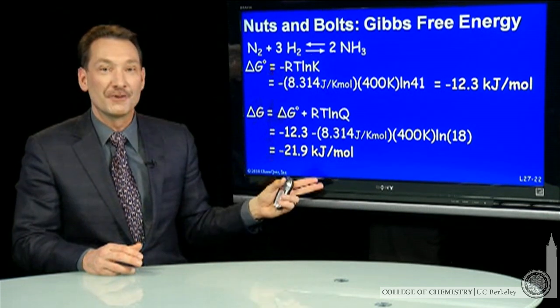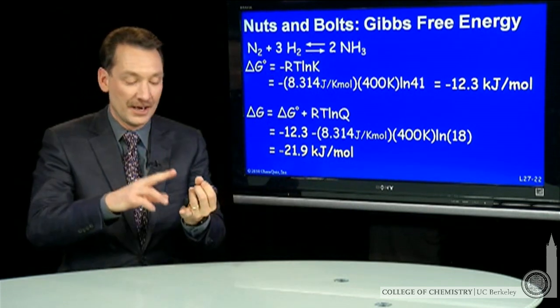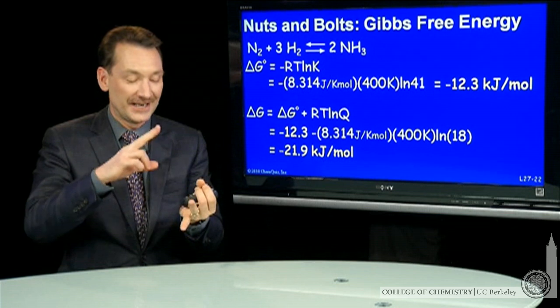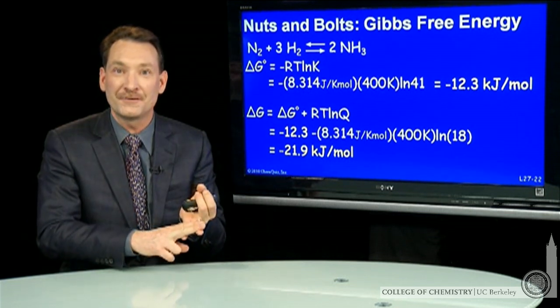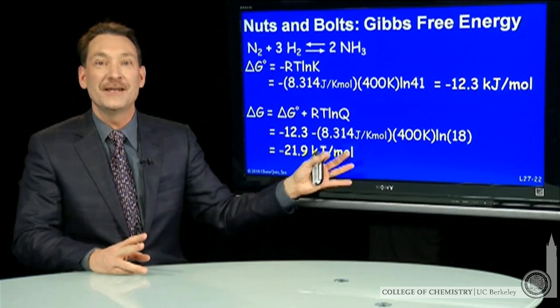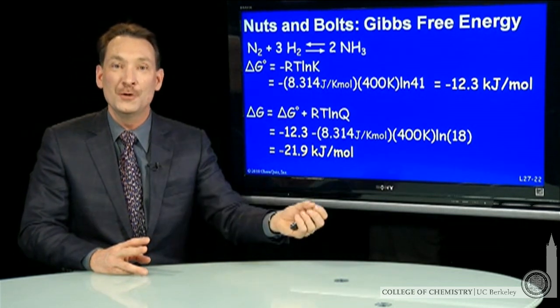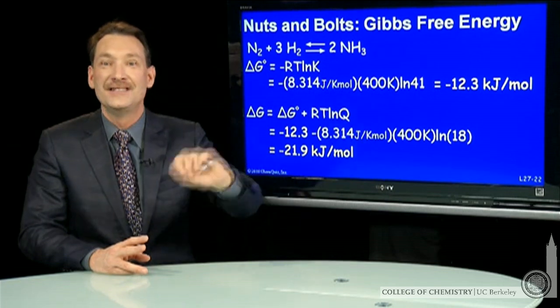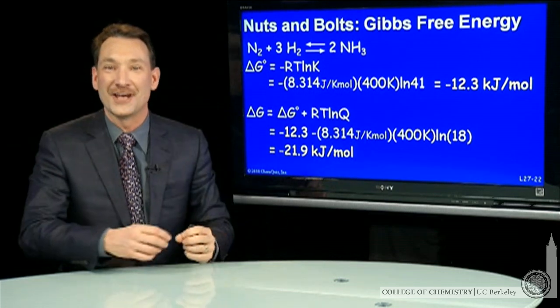So everything rings true. I can calculate reaction quotients. I can calculate standard state free energy differences and instantaneous free energy differences from the data I'm given and the relationship between Q, K, delta G, and the standard state free energy.